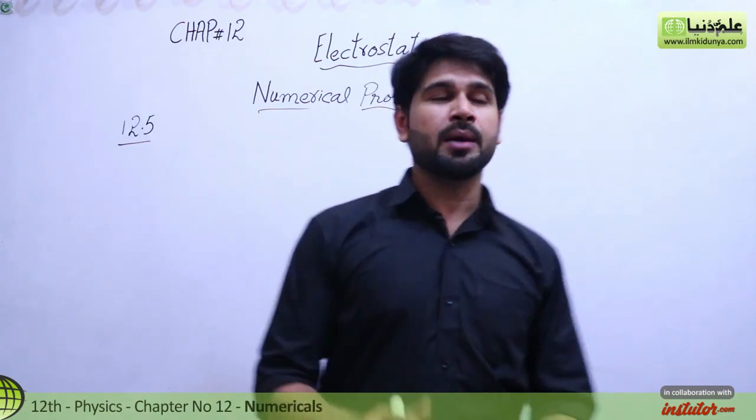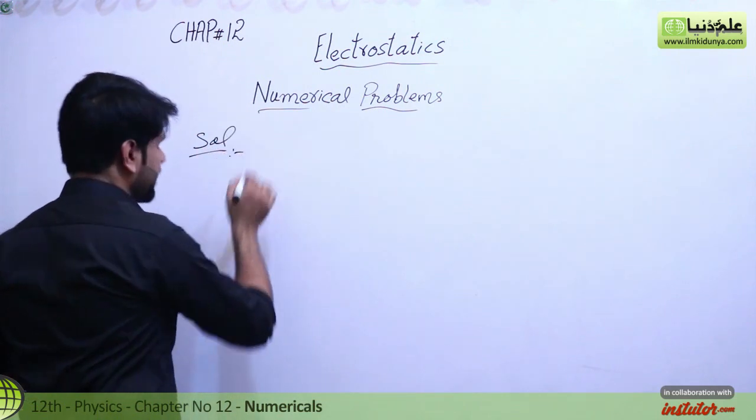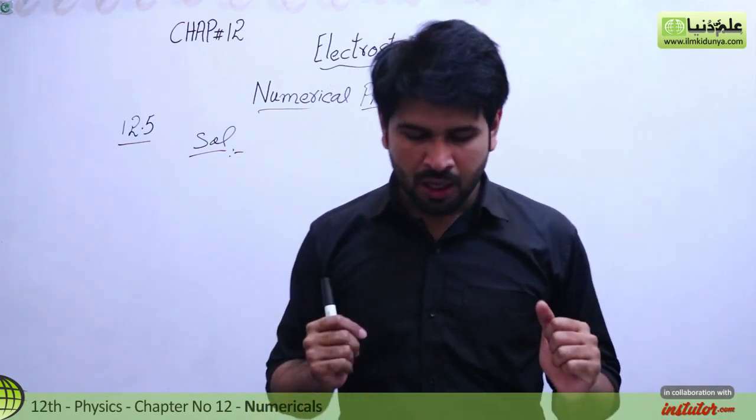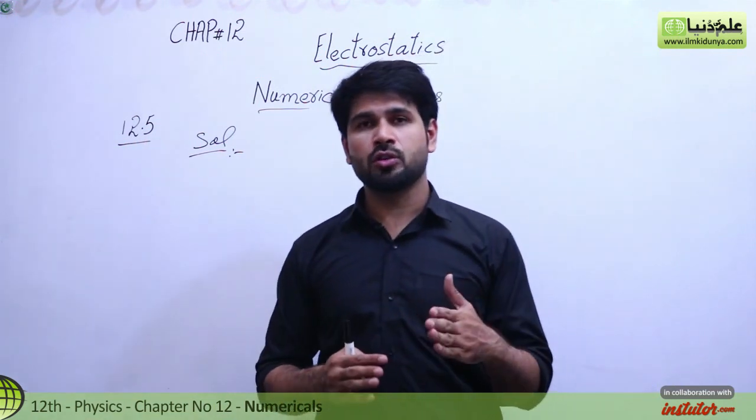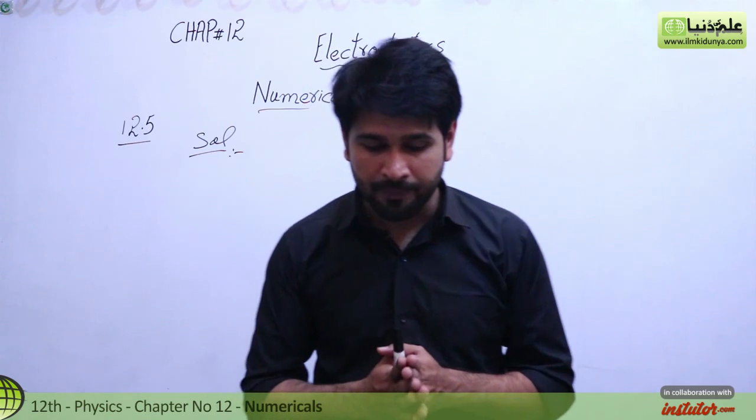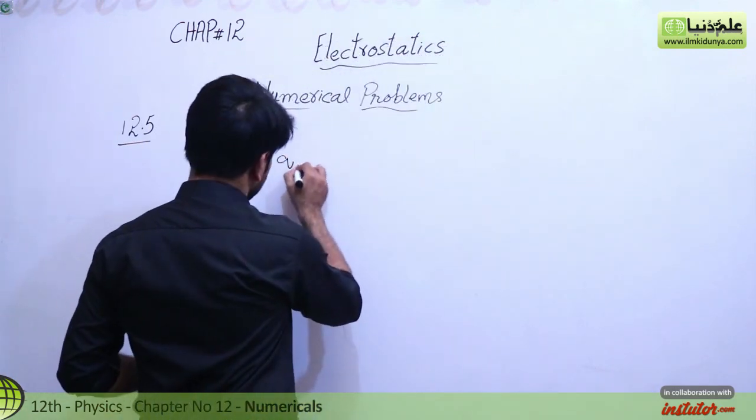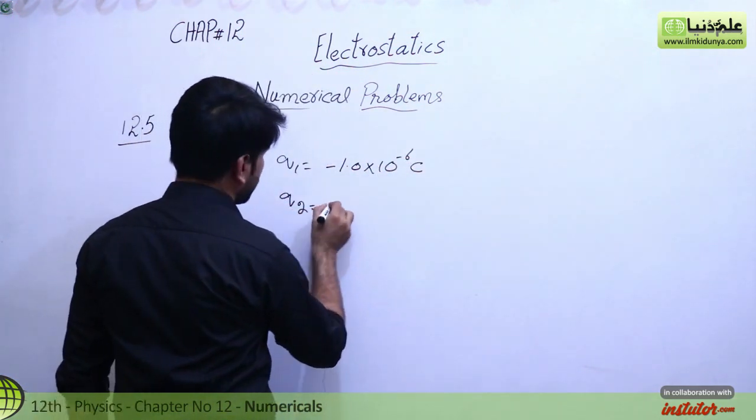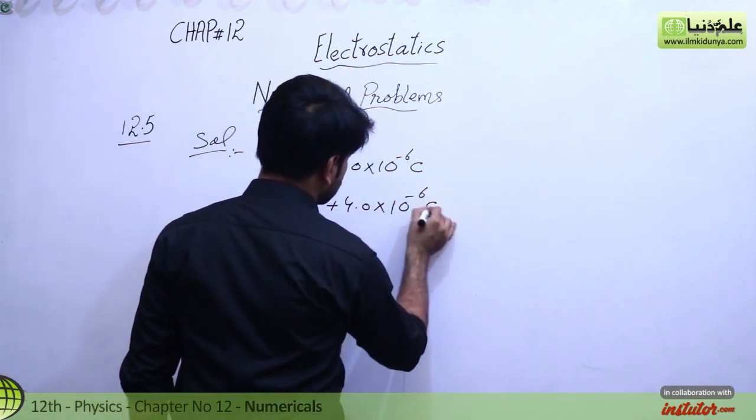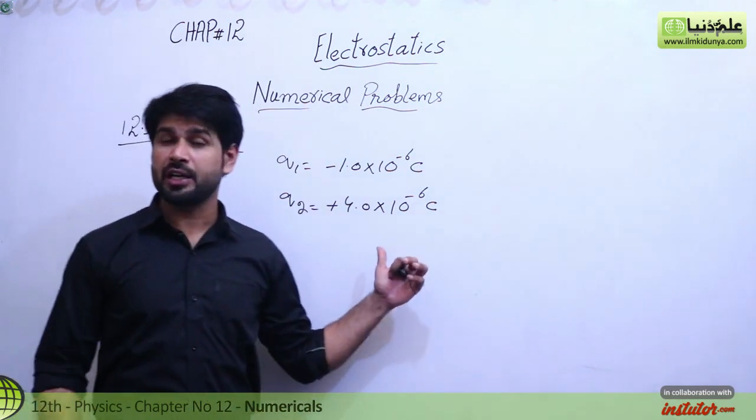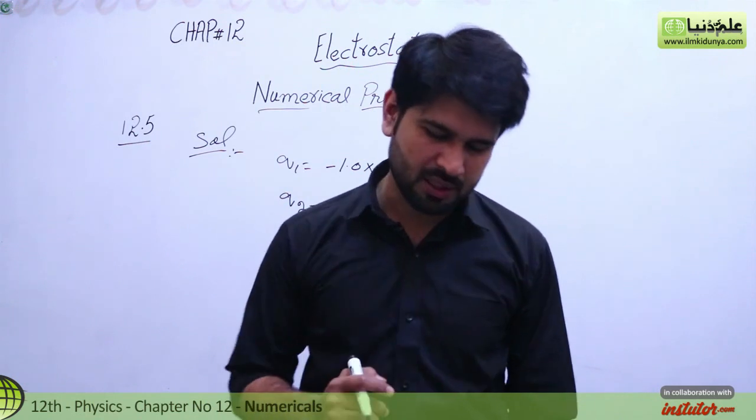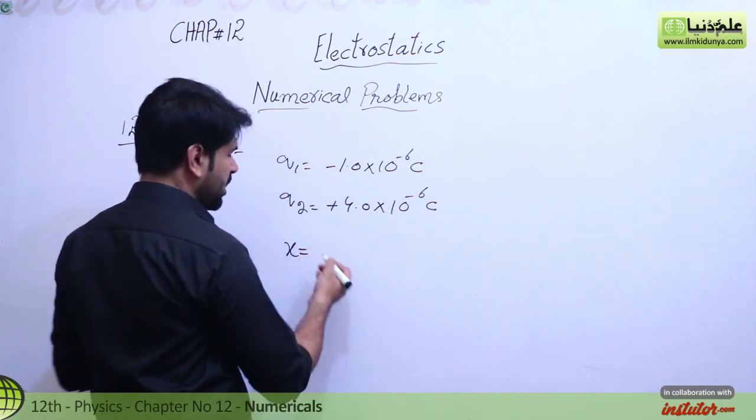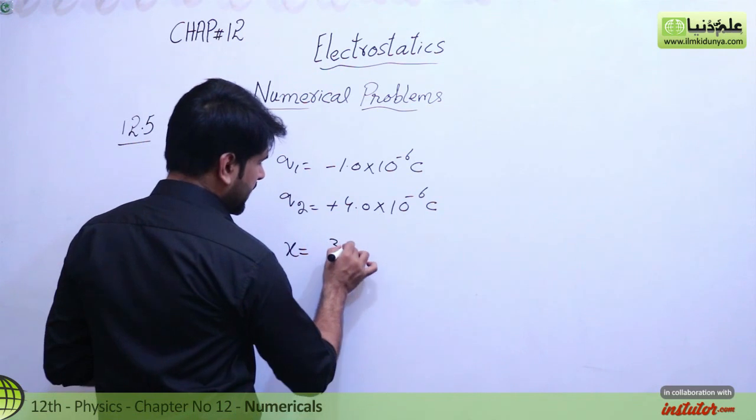If you look at this numerical problem, you will know that we have seen this before. This problem is 100%, 99% similar because here the charge values are different. The numerical approach and solution approach is 100% the same. We have q1 as minus 1.0 times 10 to the power minus 6 coulombs, and q2 is given as plus 4.0 times 10 to the power minus 6 coulombs. The negative or positive sign represents that one is a negative charge and the other is a positive charge. They are separated by a distance which you can call x or d, whatever you want, so you can call this 3 meters.